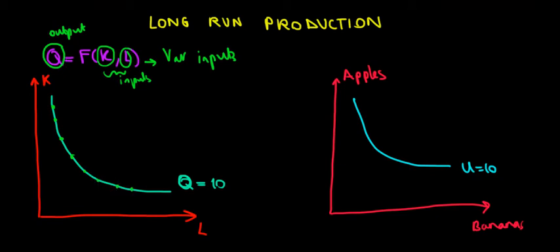Let's write that real quick: the set of inputs that give the same output - we call this the isoquant.